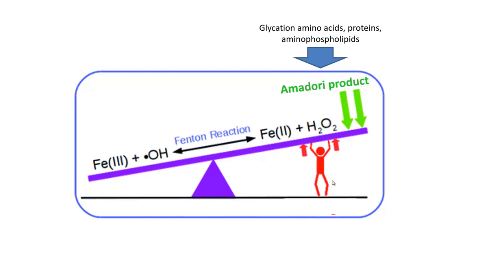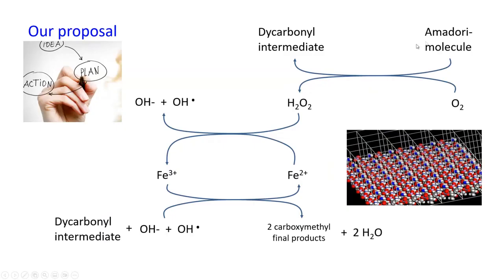However, the detailed reaction mechanisms of this process remain to be elucidated. Our proposal includes a mechanism of reaction where initially a dicarbonyl intermediate and a hydroperoxide molecule are produced in a first step, and after that a hydroxyl radical and hydroxide ion are generated in a concerted way from oxidation of iron, which is reduced and in a concerted way generates carboxymethyl final products.